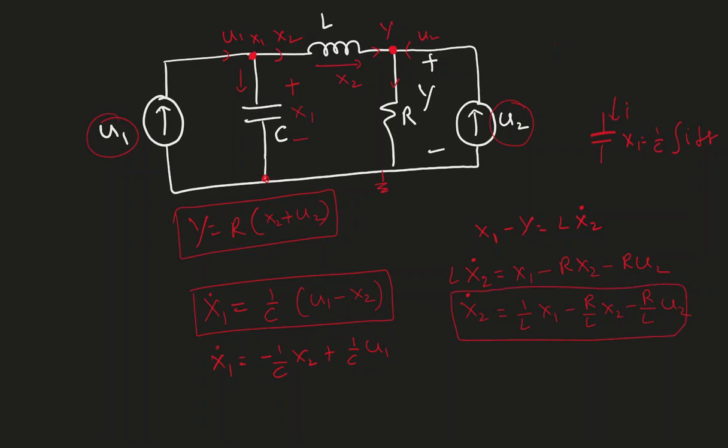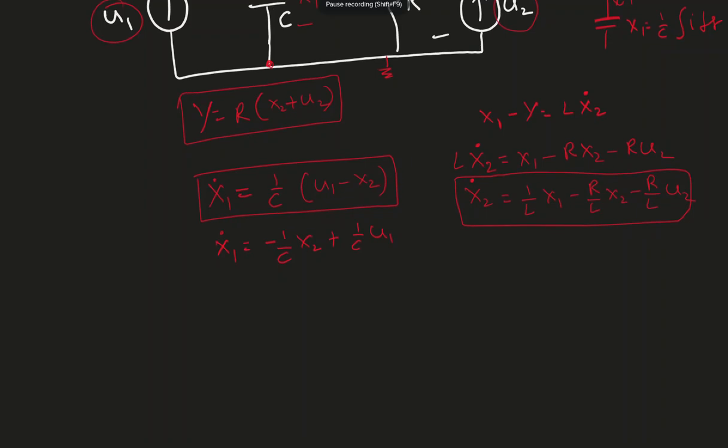I have X1 dot, X2 dot and output equation Y. If you want to write it down in the matrix format, X dot equal to AX plus BU. I have two state variables, my A is going to be 2 by 2 matrix: 0, negative 1 over C, 1 over L, negative R over L. That's my A matrix. And B matrix, I have 1 over C here for U1, there is no U2 term. Here, 0 and negative R over L for U1 and U2.